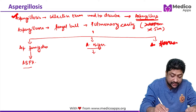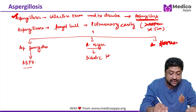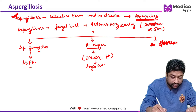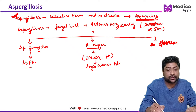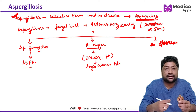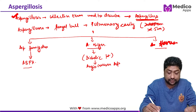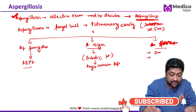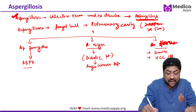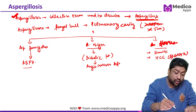Aspergillus niger is generally seen in diabetic patients and causes angio-invasive aspergillosis — an invasive form that attacks blood vessels and causes very high mortality. Aspergillus flavus causes two diseases: recurrent sinusitis and hepatocellular carcinoma. It releases aflatoxin, which is implicated in the causation of hepatocellular carcinoma.